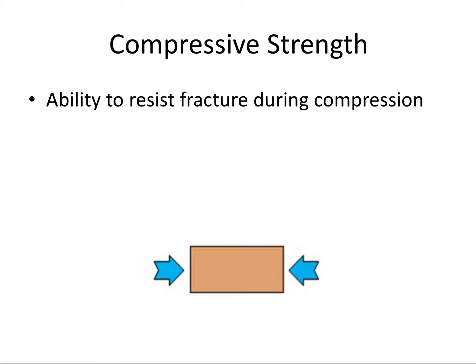Our first definition is compressive strength, and this refers to the ability of a material to resist fracture during compression. In this image, the arrows depict the application of force. Think of a crown withstanding the pounding of occlusal forces from opposing dentition — that would be an example of compressive strength.